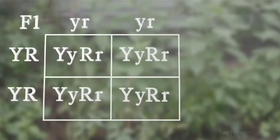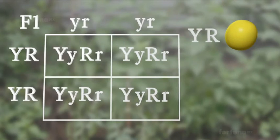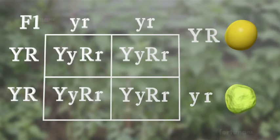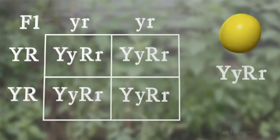The F1 plants receive a YR allele from the yellow round seed parent and a yr allele from the green wrinkled seed parent. Although the traits for four characteristics are in the genes, the plants will exhibit only two characteristics: seeds which are yellow and round.